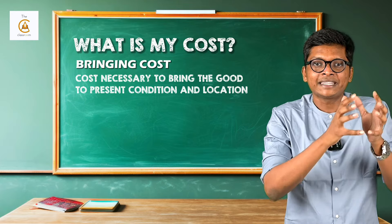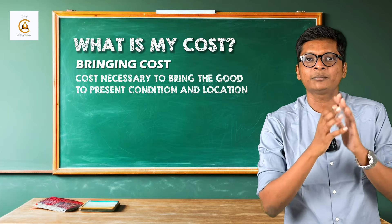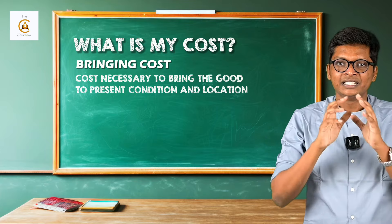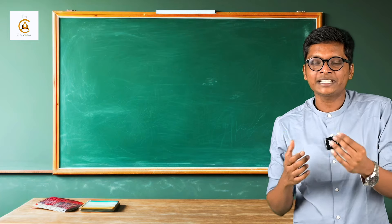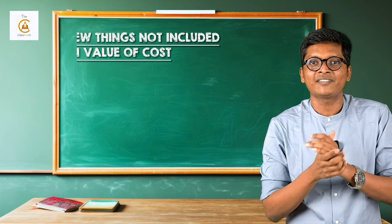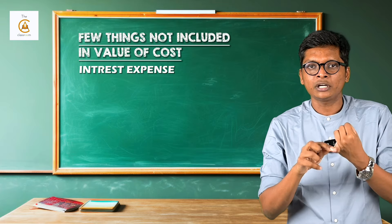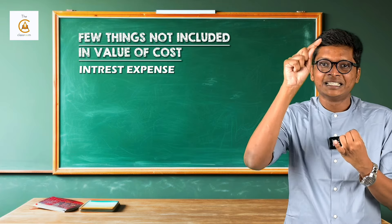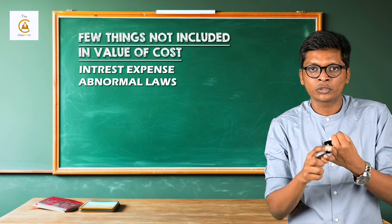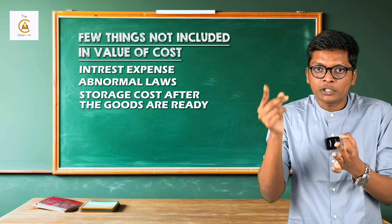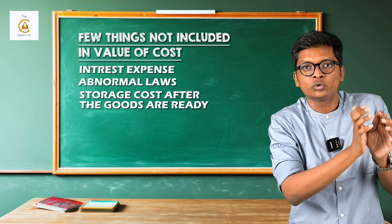In conversion cost, you have multiple costs like variable overhead and fixed overhead. Variable overhead is absorbed at actual output; fixed overhead is absorbed at normal capacity. The last part of cost is bringing cost — cost necessary to bring the good to present condition and location. Taking the Maza example, the bottle, the label, and all of the primary packaging comes under this. These are the elements of cost.